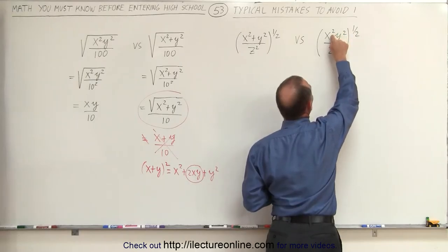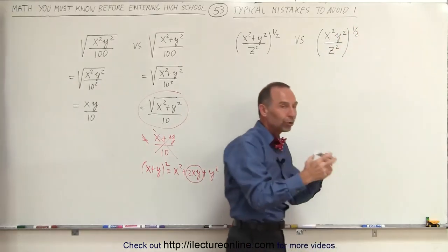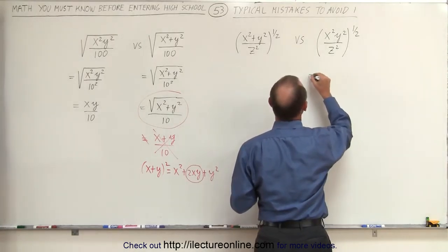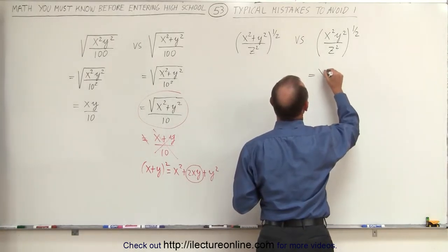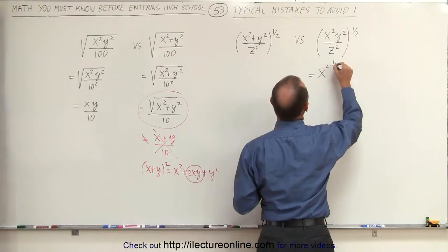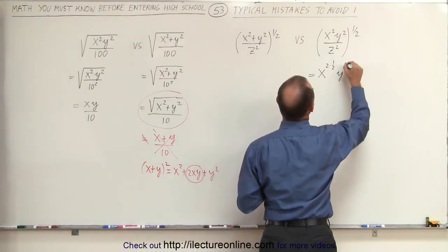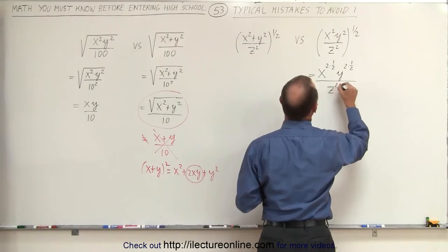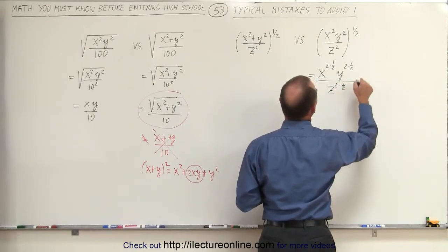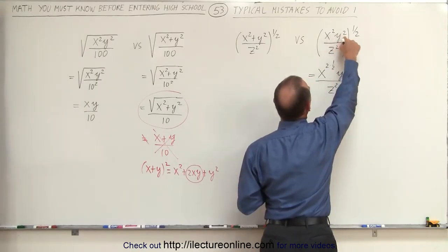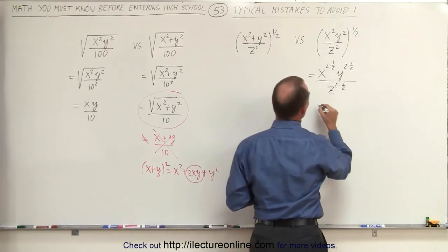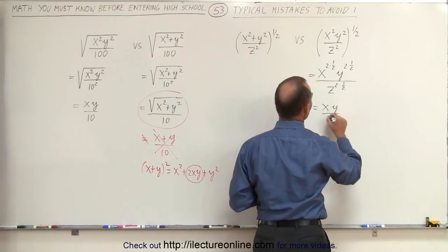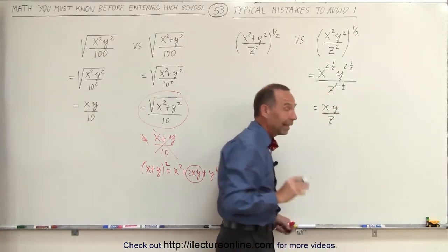When you have an exponent raised to an exponent, you multiply the exponents together. So the proper way of simplifying this: x squared times one-half, times y squared times one-half, divided by z squared times one-half. You simply multiply these exponents by one-half, which gives you x to the first power, y to the first power, and z to the first power. And that is correct.